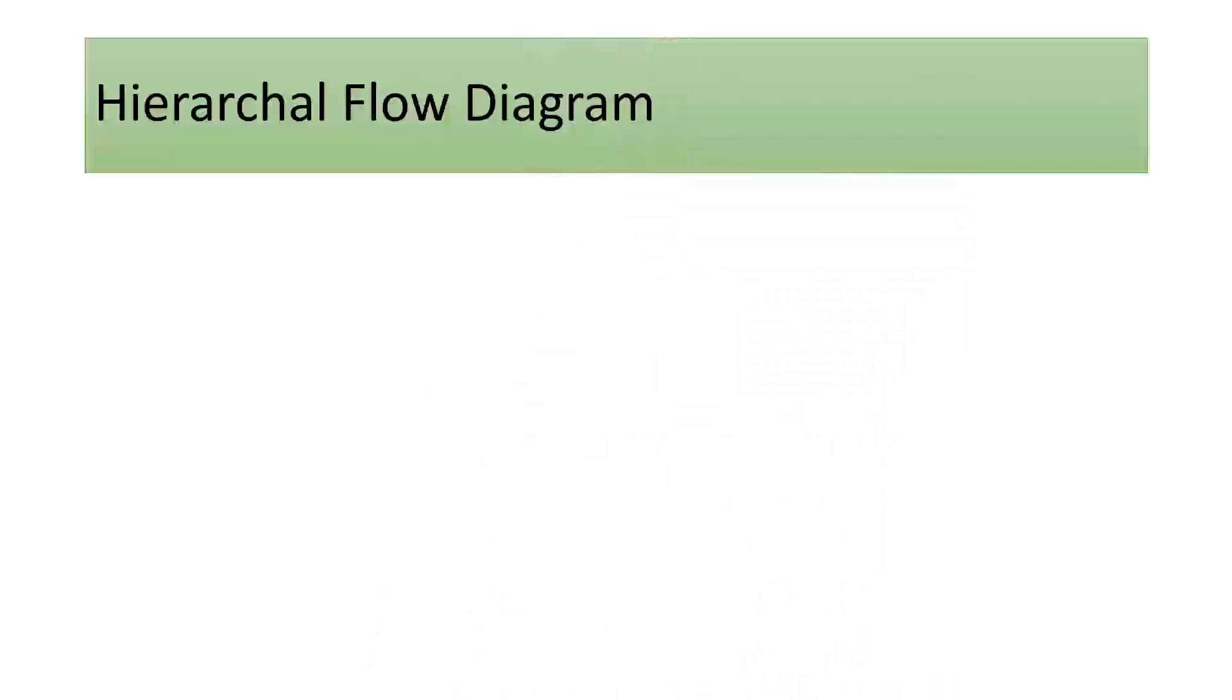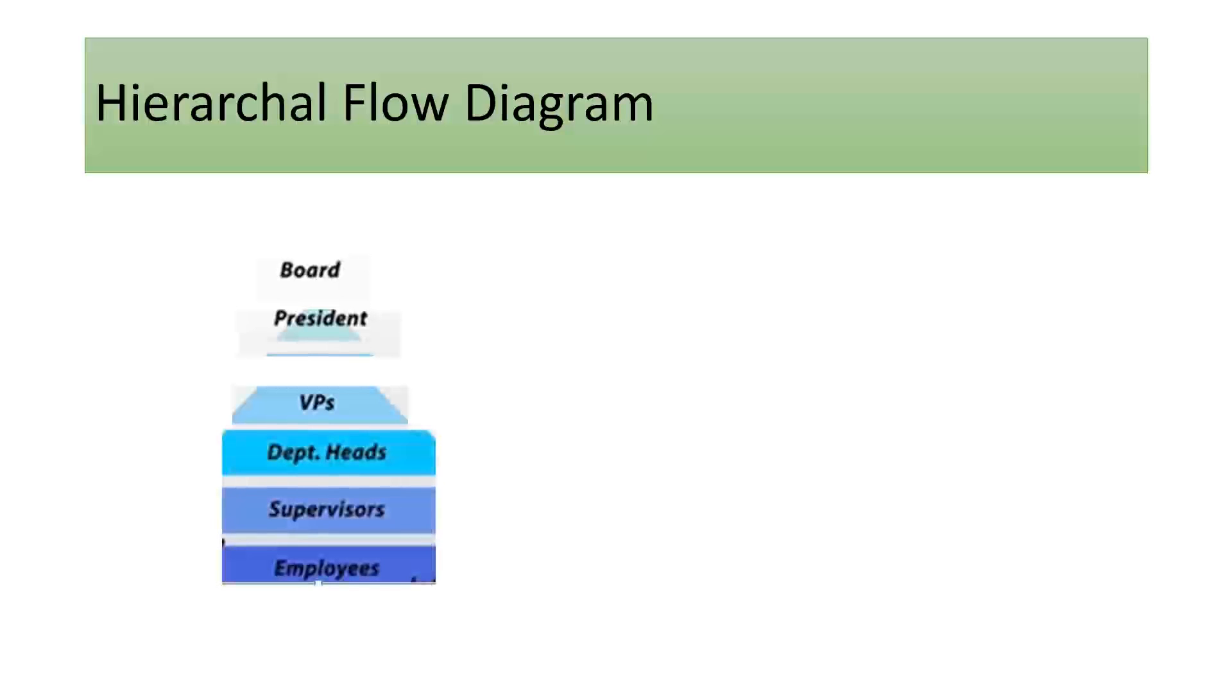For example, as seen, the board is the highest authority used in the diagram. The authority then moves down onto the president, vice president, department heads, and so on until it reaches the base level, which is the employees.